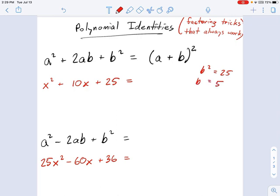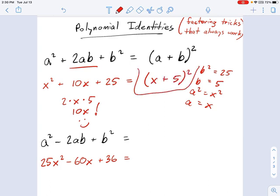And if the other term is x squared, that means a squared equals x squared. That means a equals x. So what is 2ab? Well, that's going to be 2 times a is x, times b is 5. That's 10x. Yes, that works. So we have ourselves a perfect square, and we can simply write this as x plus 5 squared. So that works out.